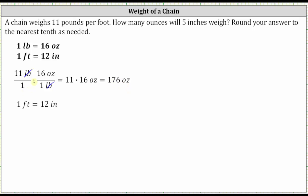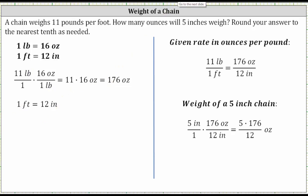Now that we know 11 pounds is equal to 176 ounces and one foot is equal to 12 inches, we know the given rate of 11 pounds per one foot is equal to the rate of 176 ounces per 12 inches.